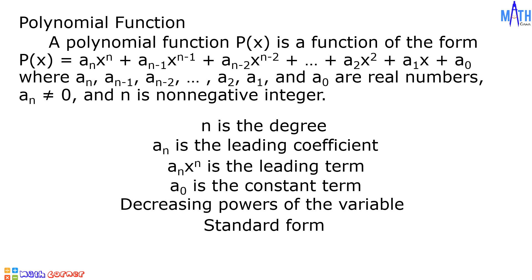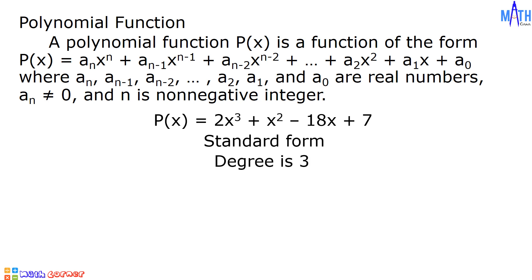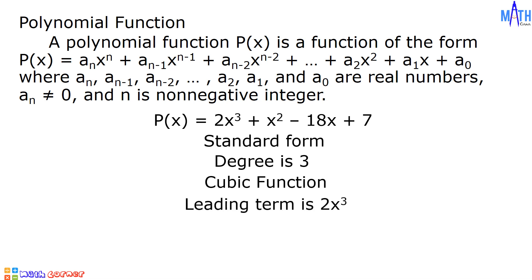Let us have some examples of polynomial functions. Example number 1: P of X equals 2X cubed plus X squared minus 18X plus 7. This polynomial function is written in standard form. In this function, the degree is 3 — it is called a cubic function. The leading term is 2X cubed, the leading coefficient is 2, and the constant term is 7.